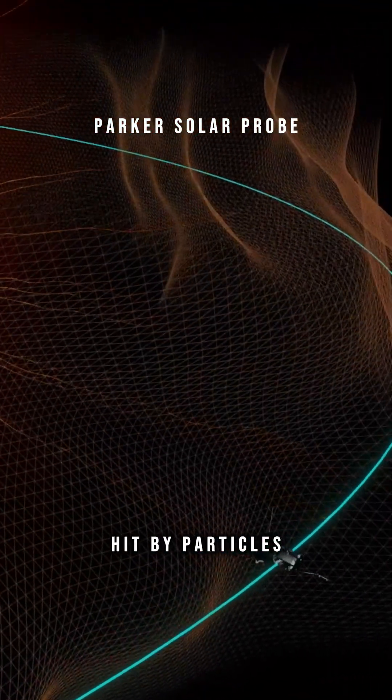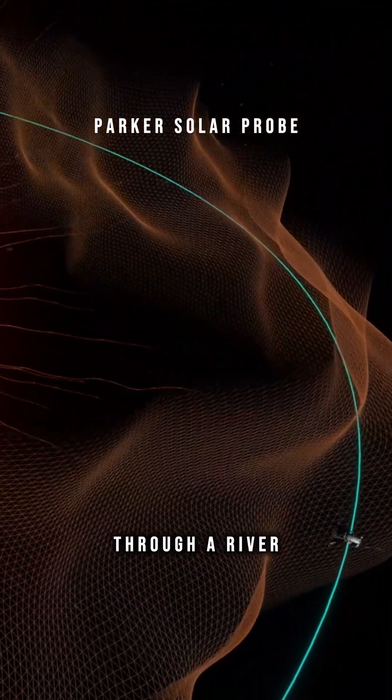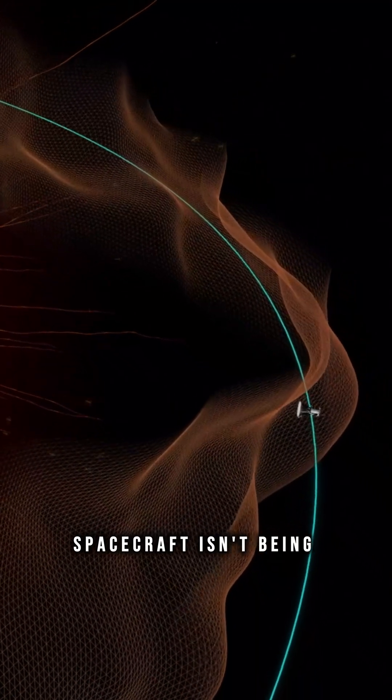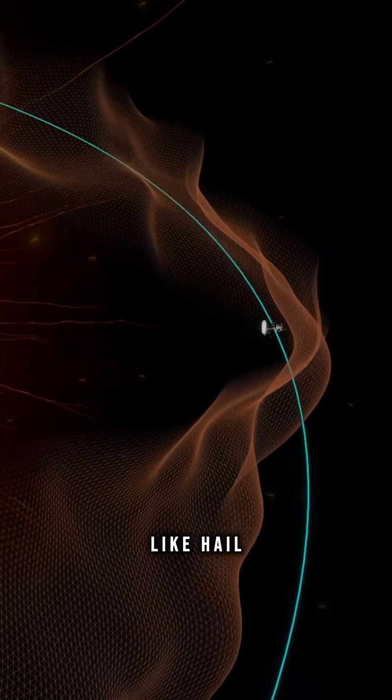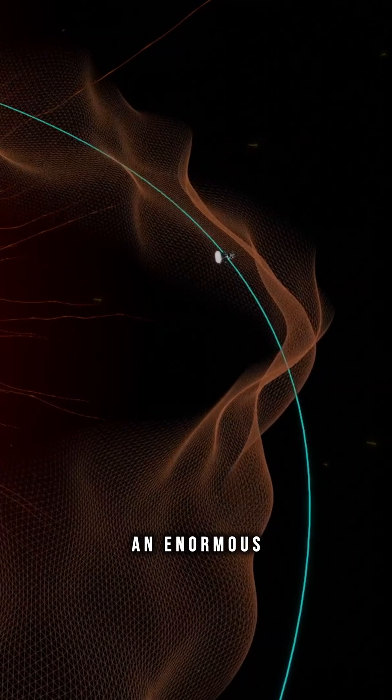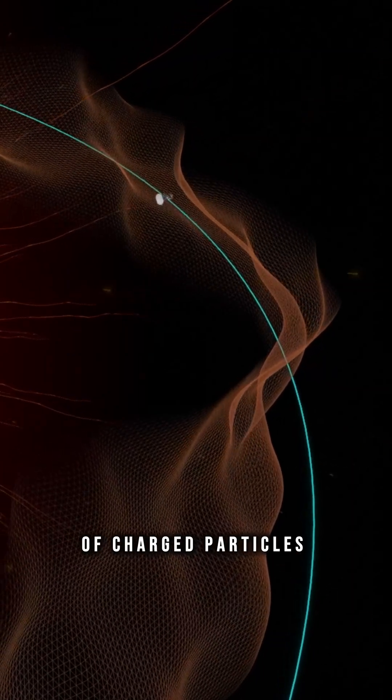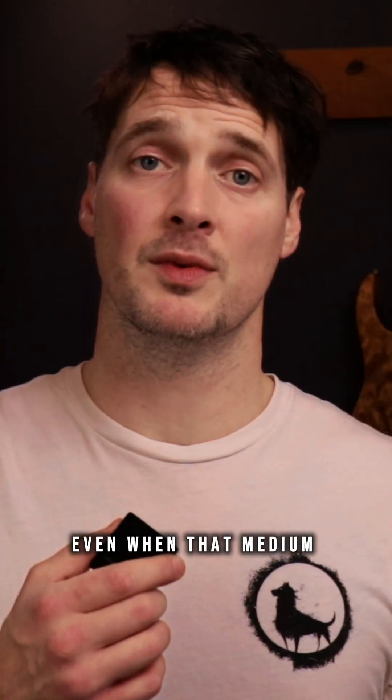Think of it less like being hit by particles and more like crossing through a river. The spacecraft isn't being struck in isolated collisions like hail. It's moving through an enormous, flowing medium of charged particles and magnetic fields. Even when that medium is tenuous or thin, a continuous flow still applies a continuous force.